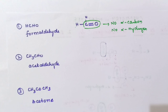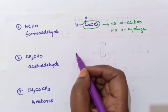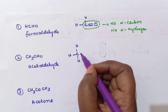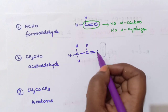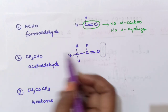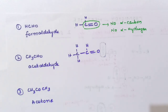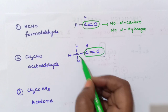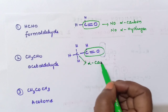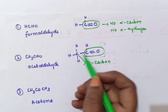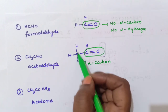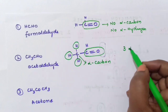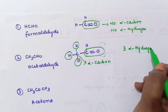Next is acetaldehyde. The structure is CH3-CHO. This is the carbonyl carbon. The next carbon — CH3 — is called as alpha carbon. How many alpha hydrogen atoms are there attached to this alpha carbon? You can see 1, 2, 3 — there are 3 alpha hydrogen atoms present in acetaldehyde.